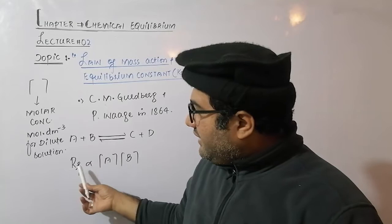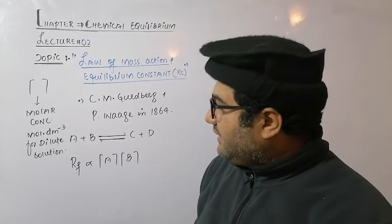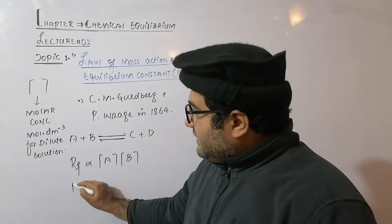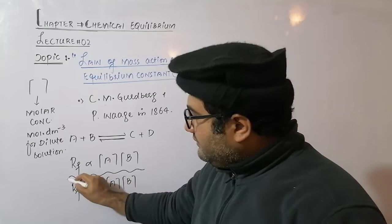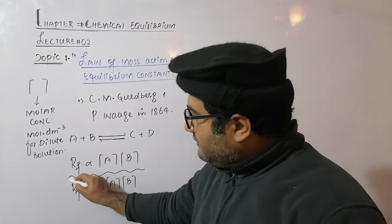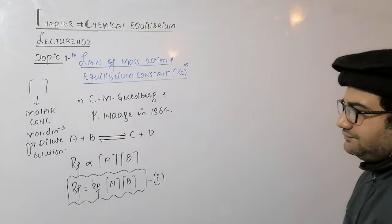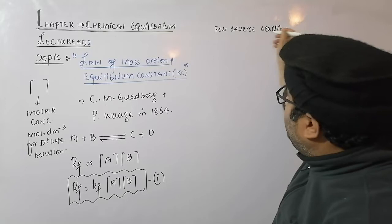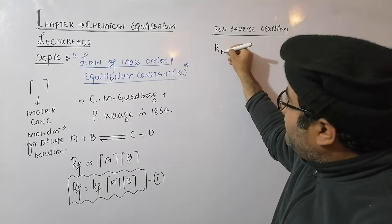According to the Law of Mass Action, the rate of a reaction is directly proportional to the product of molar concentrations of the reactants. The rate of forward reaction is directly proportional to molar concentration of A times molar concentration of B. Replacing the sign of proportionality with equality, a constant is used — that is the rate constant for the forward reaction. Similarly, for the reverse reaction: